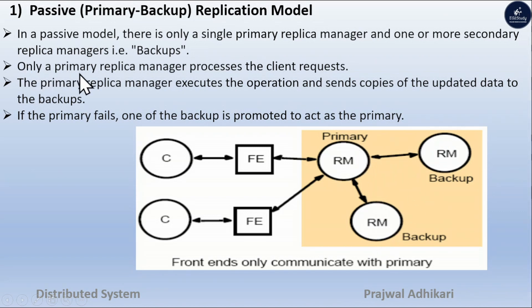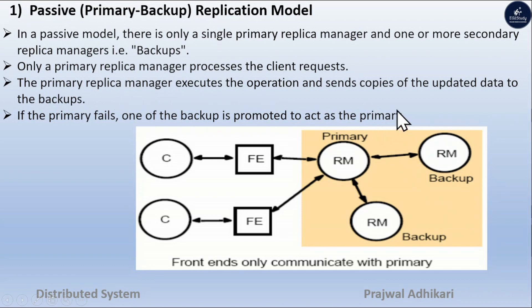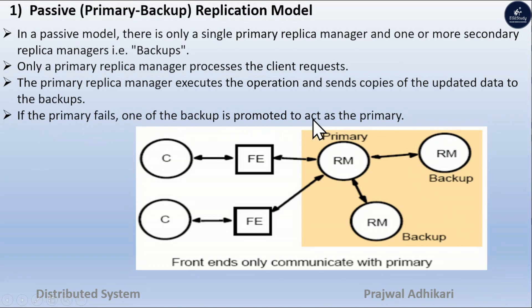Only the primary replica manager processes the client request. The primary replica manager executes the operation and sends a copy of the updated data to the backups. If the primary backup fails, one of the backups is promoted to become the new primary.